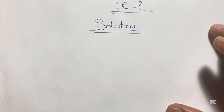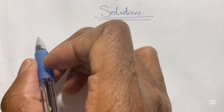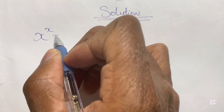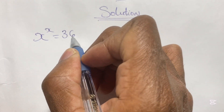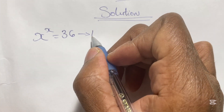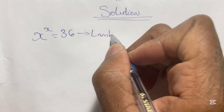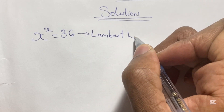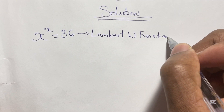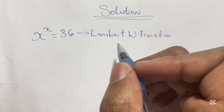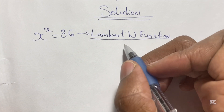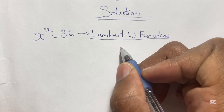As we begin to solve this equation, you may want to save this video for future reference. Now I must confess that normal algebra methods cannot be used to solve these problems, so we will be using a special kind of function called the Lambert W function. This is a special kind of function that is used to solve variables where the variable is in the base and also in the power.